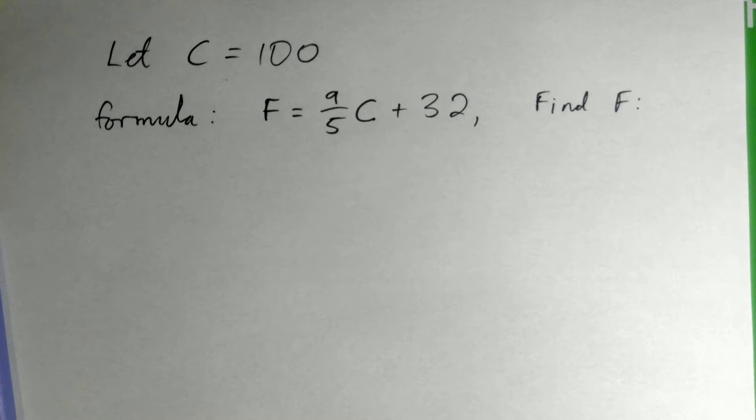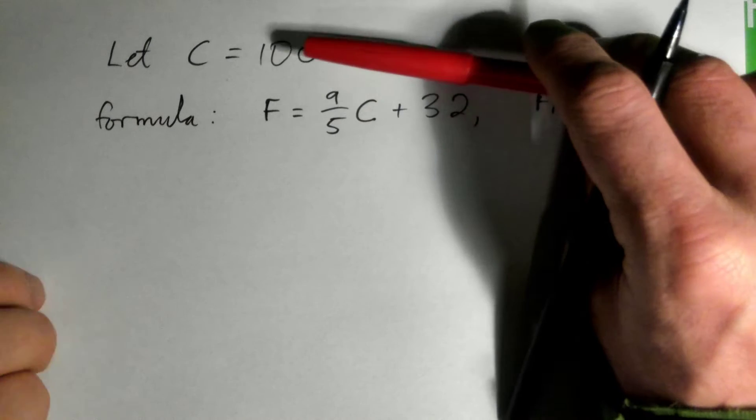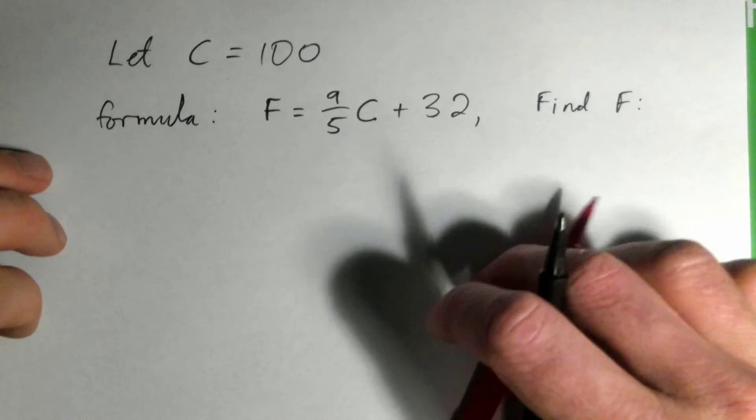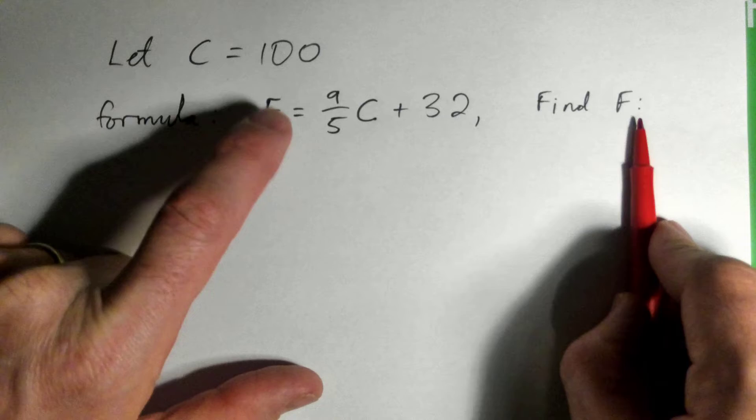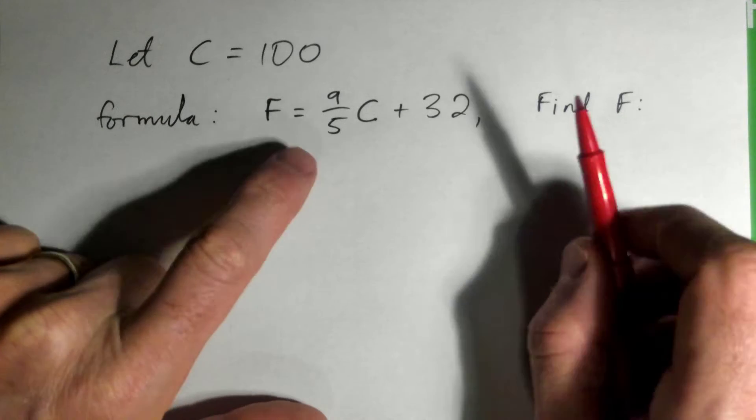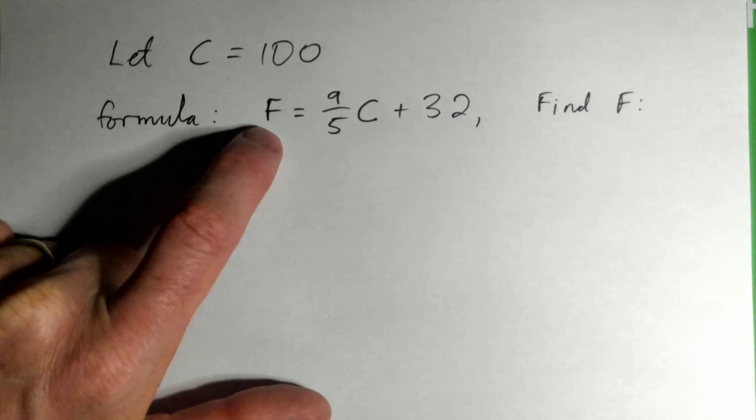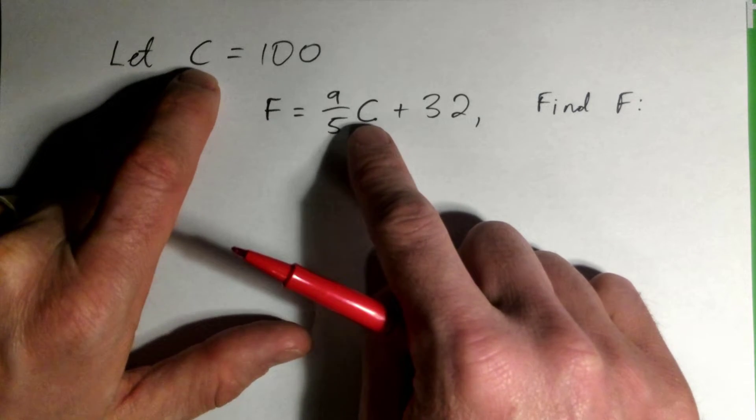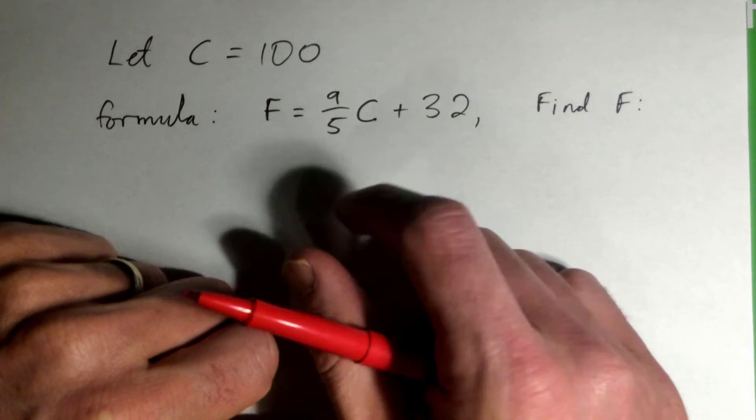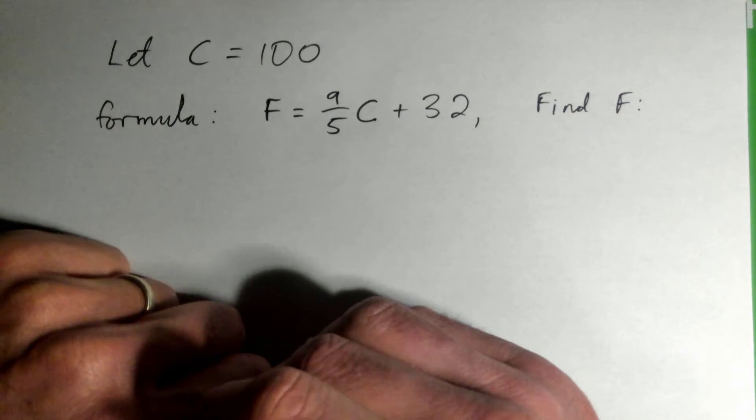Alright, so C is Celsius, so degrees Celsius. A hundred is basically the boiling point of water. So what's the equivalent temperature in Fahrenheit? Fahrenheit is F, right? Fahrenheit is typically used in the US and some other countries. Celsius is used by most of the rest of the world, Europe and whatnot.